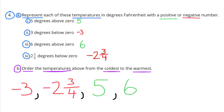Number 4, A. Represent each of these temperatures in degrees Fahrenheit with a positive or negative number. 1: 5 degrees above 0 — that would be 5, or positive 5. 2: 3 degrees below 0 — that would be negative 3.